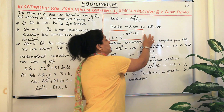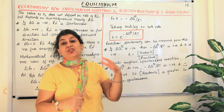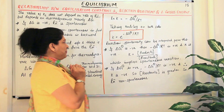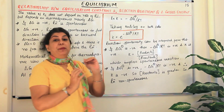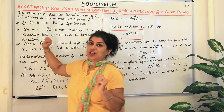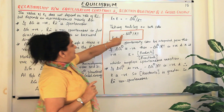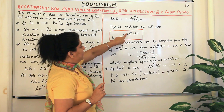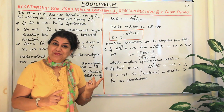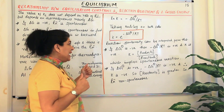This equation is very important because it relates Gibbs free energy to equilibrium and helps us understand why a reaction is spontaneous. If delta G-naught is negative, then minus delta G-naught over RT is a positive value. Taking e to a positive power gives a value of K greater than 1.